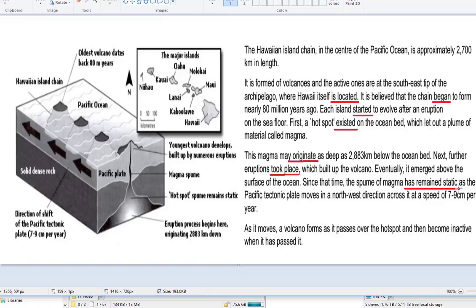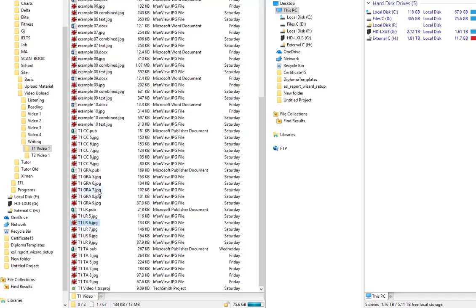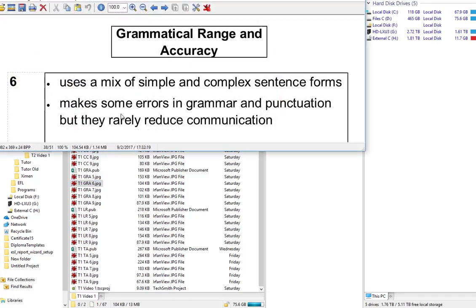It has remained static. So here we have some present perfect structures. Present tense. The spume. Here we have the word spume. Here we have the word plume. I'm not sure which is correct. Here it says spume. Here we have the present tense again. So, there's a problem with tenses here. Let's have a look at six. Well, it doesn't reduce communication. But there are some problems with grammar. Specifically about the tenses.